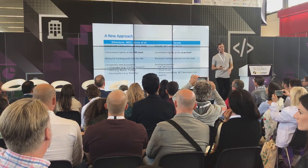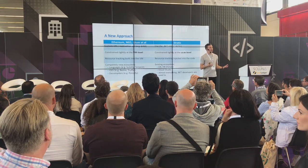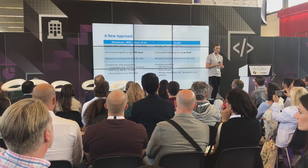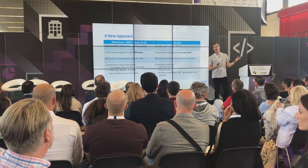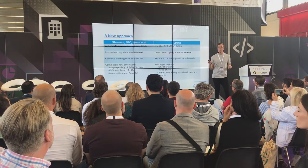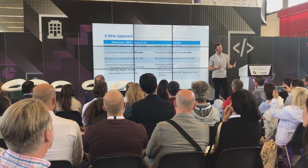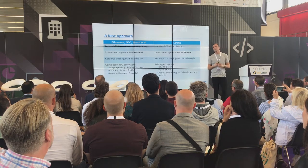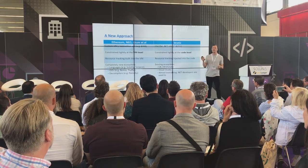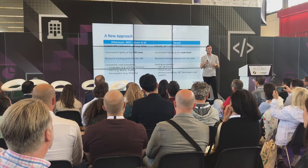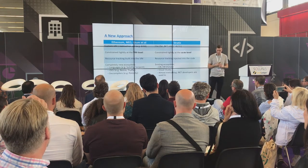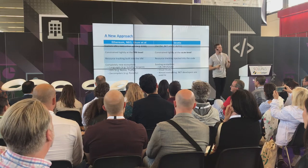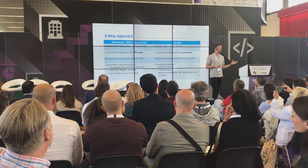Imagine you want to build a smart contracts platform — this is where it's really difficult. It's a really tough problem because you need to have nodes all over the world that need to be able to execute any kind of code, no matter what code any developer wants to upload. Yet at the same time, all of these nodes always have to agree on the outcome of the code execution. To fix this tough problem, the very first solution was to build a custom virtual machine.